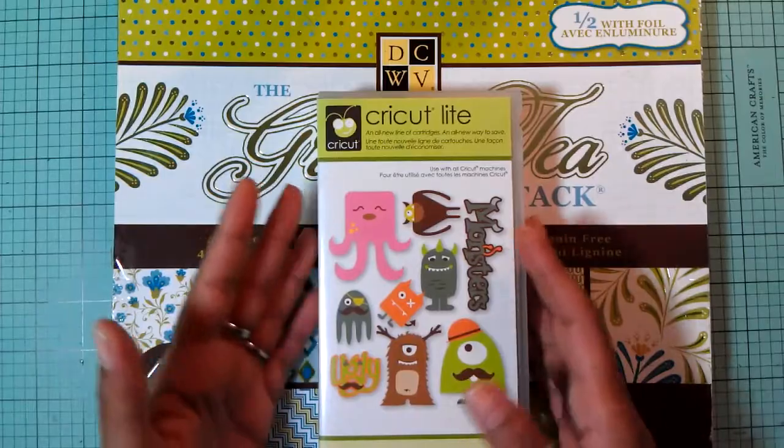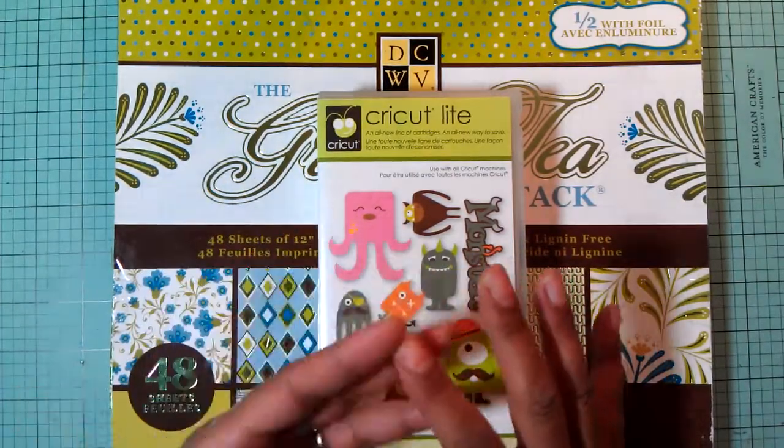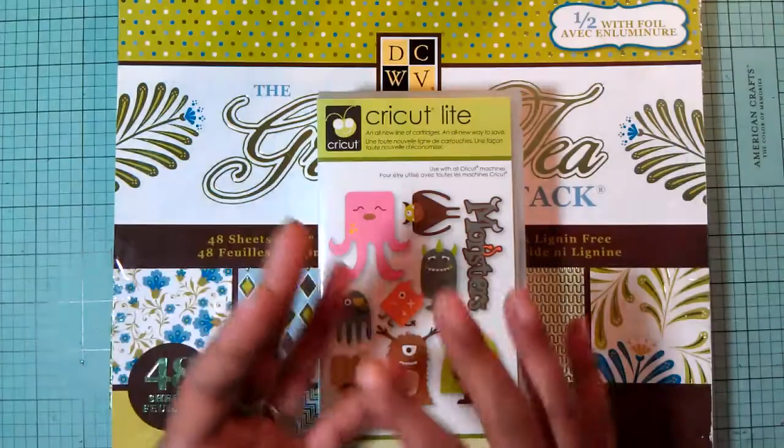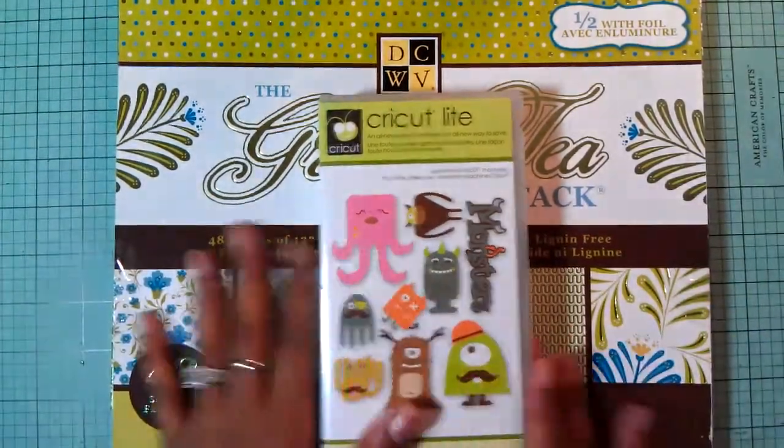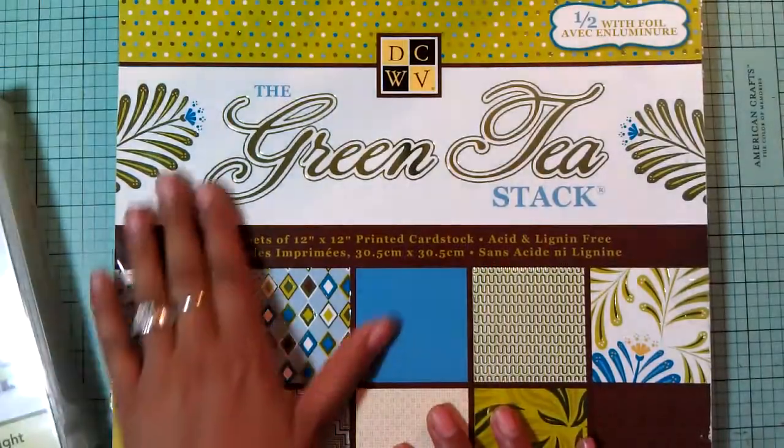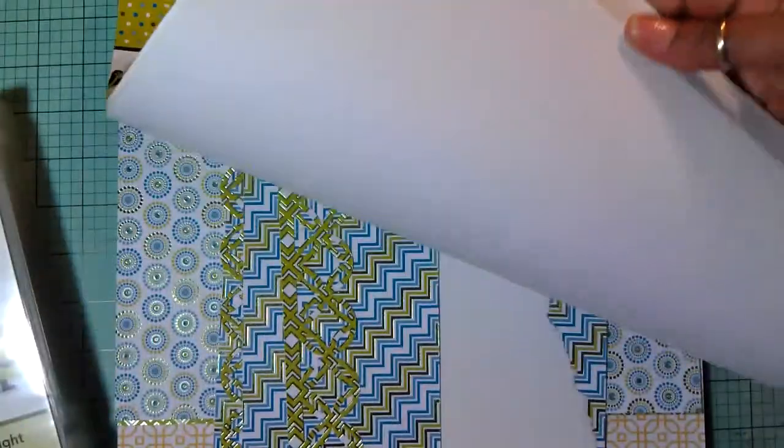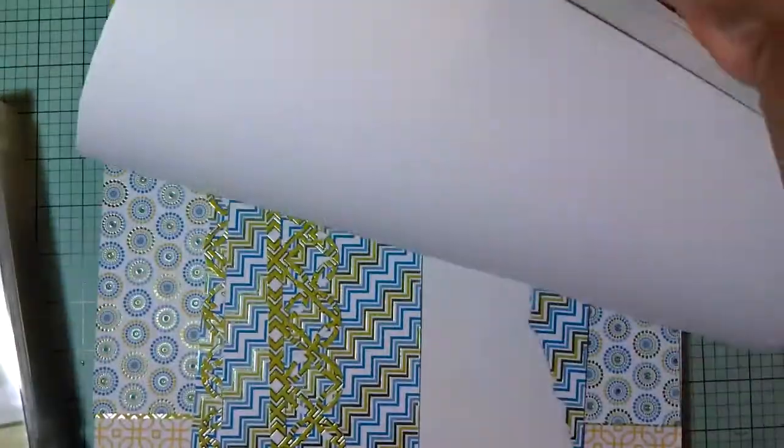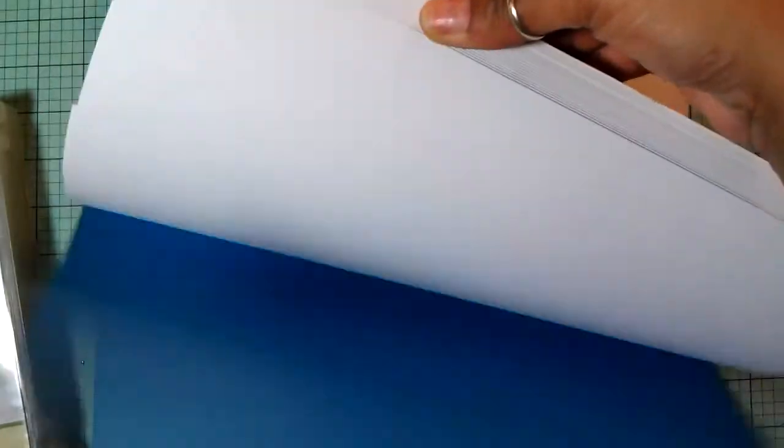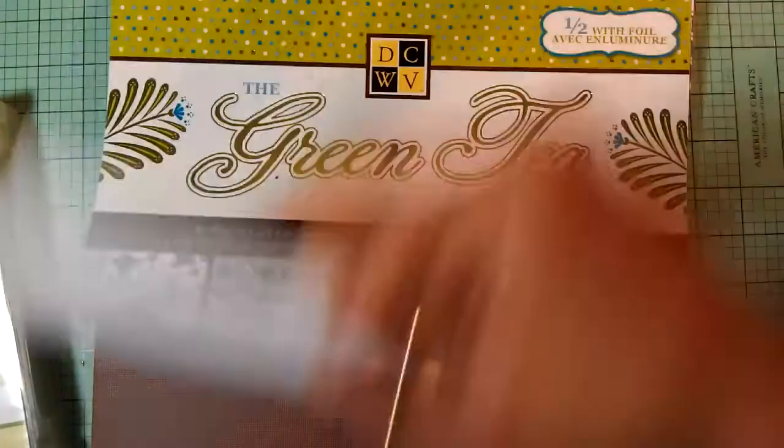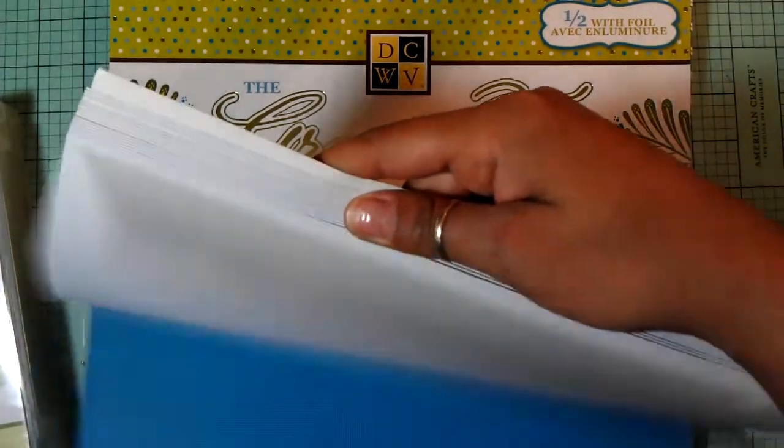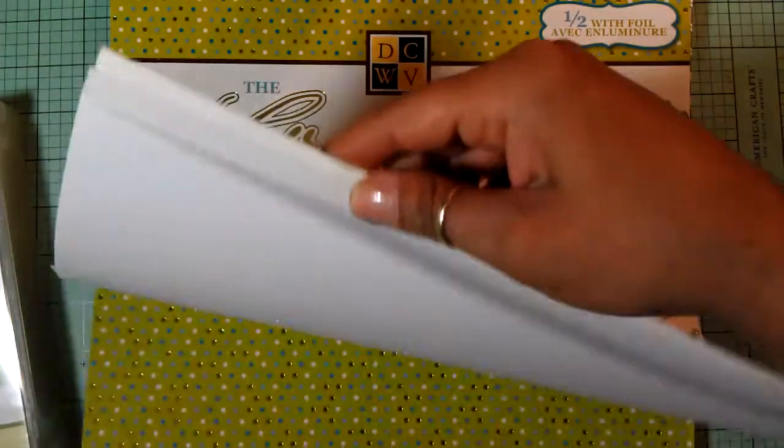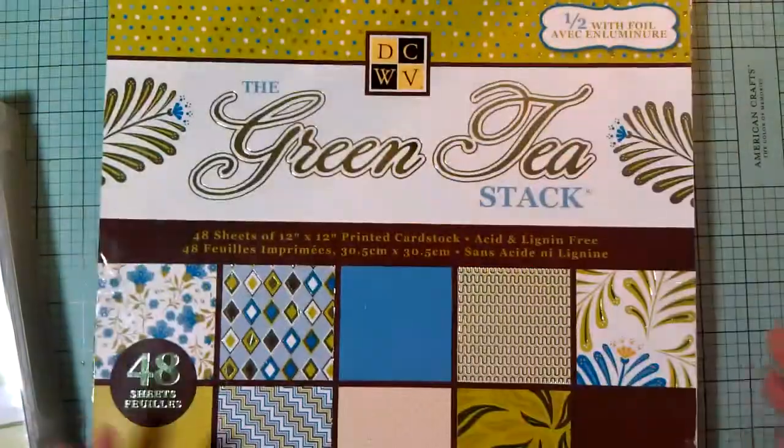The Cricut Light cartridges are so easy and they're not so many cuts that you have to put together. The most cuts you have to do is put four cuts together - that's the base and the three little layers that go on top like the shoes, the hat, the clothes or something like that. I'm using this cartridge and this paper stack called the Green Tea Stack. I'm using this paper pattern today, so let's get started.